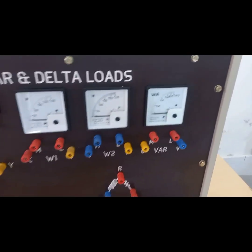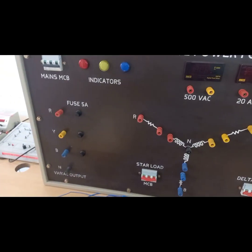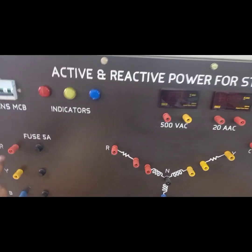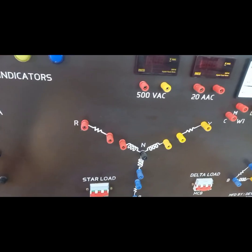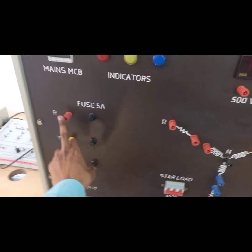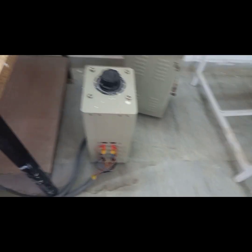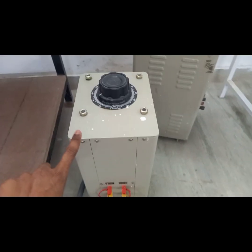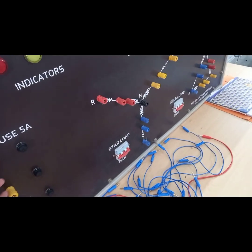We are going to connect this control panel. We have three phases R, Y, B and a neutral. This panel gets three-phase power supply from a three-phase variac, and from this three-phase variac we connect directly to this particular control panel, so we are getting three-phase power supply here.